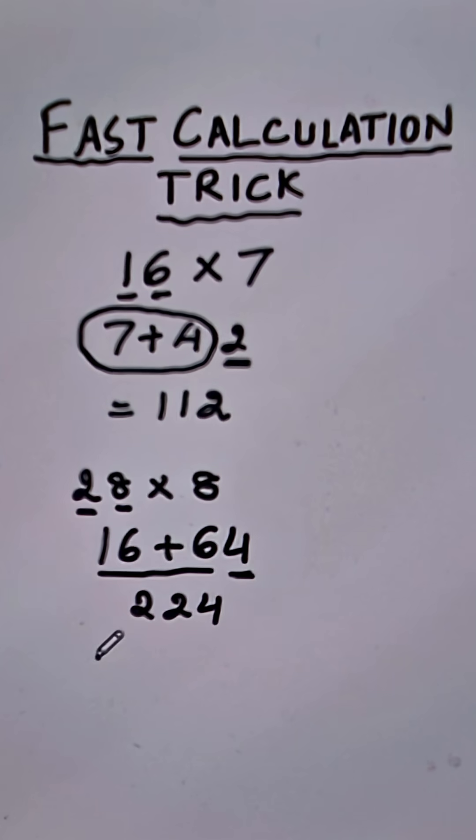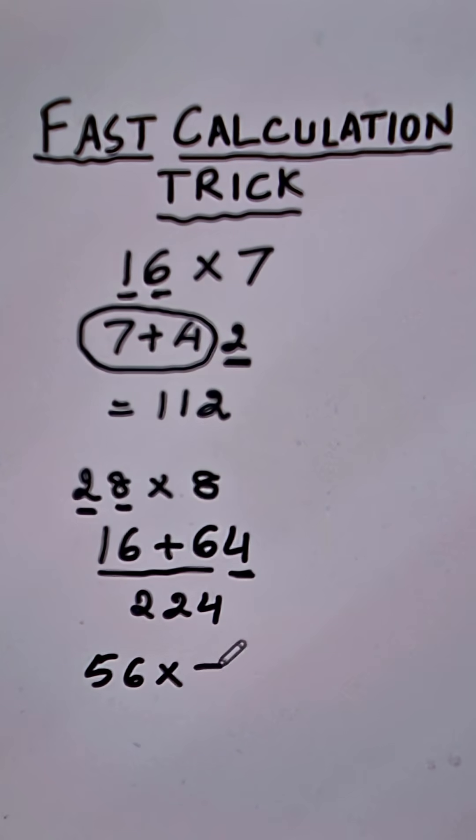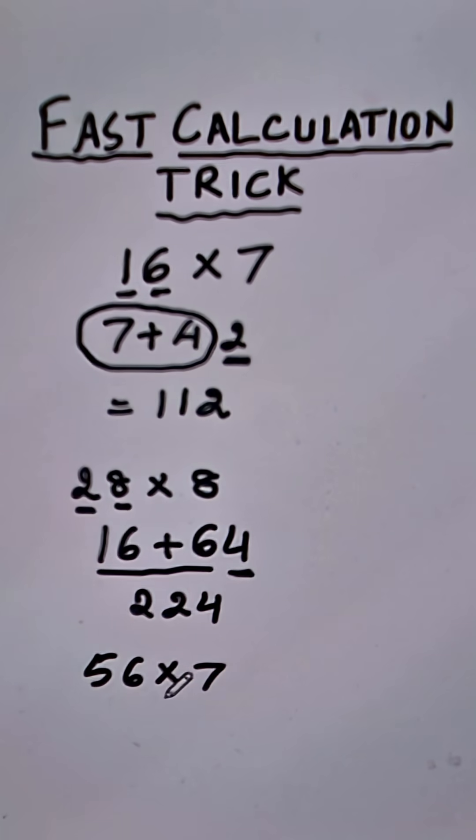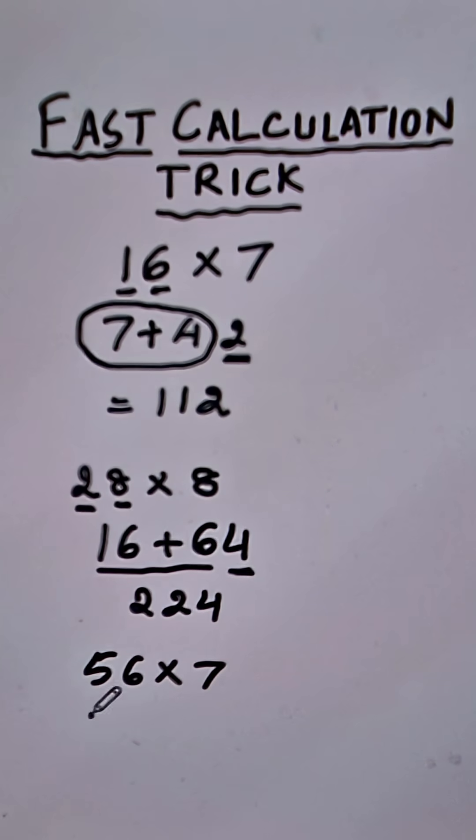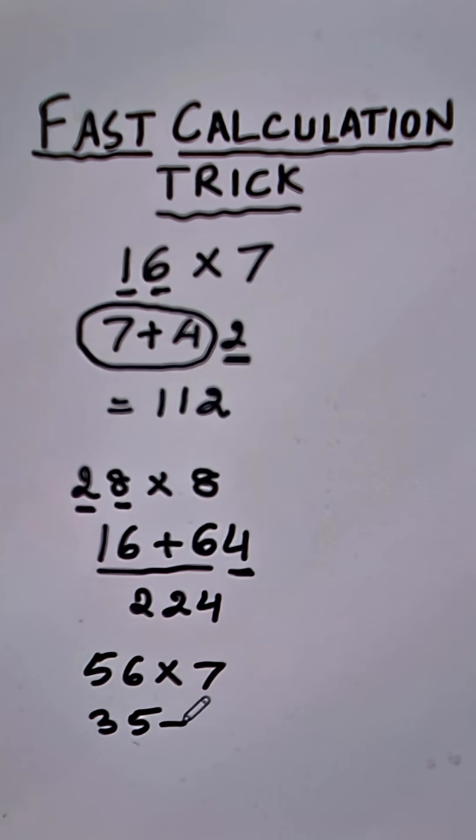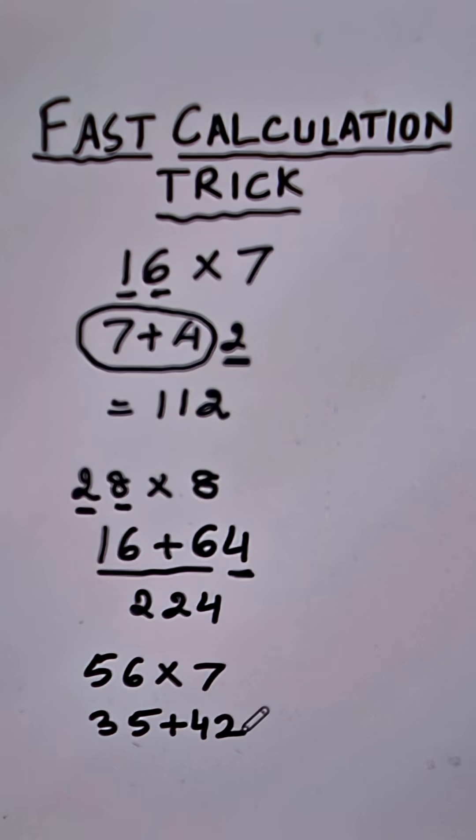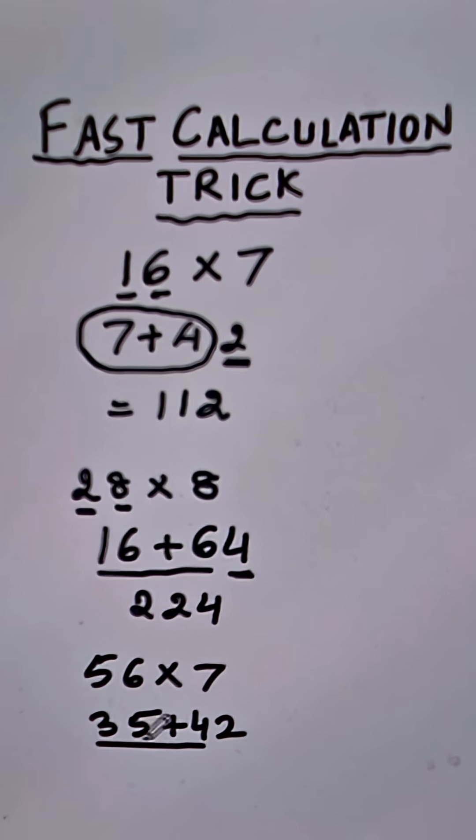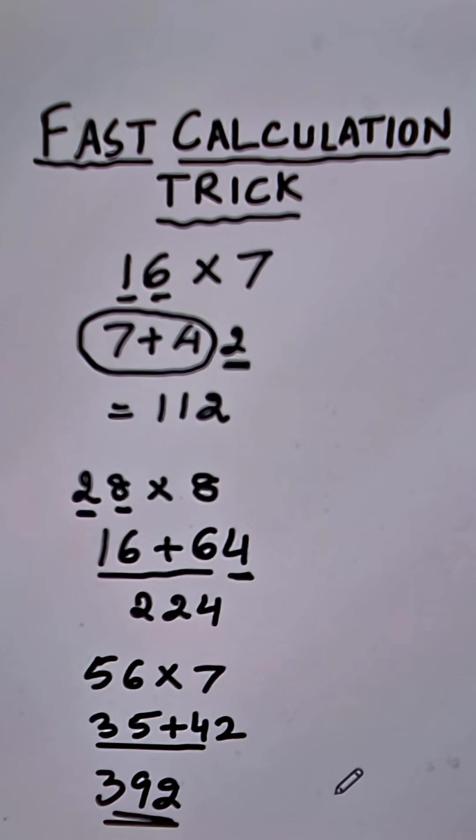One more. Let us do 56 times, you can do any number say 7. So we know what is 5 times 7 right? And 5 times 7 is 35. Put a plus sign and then do 6 times 7 which is 42 and now add the first digit. 35 plus 4 is 39 followed by a 2 and that gives you the required product.